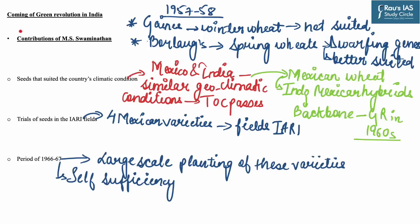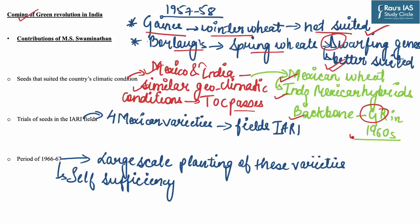Coming back to the Green Revolution in India: MS Swaminathan's contribution is well known. His scientific knowledge about India's climatic conditions and crop productivity guided the country towards agricultural revolution, making India self-sufficient in grain production. The Gaines variety was a winter wheat not suitable for India's climate, while Borlaug's spring wheats from Mexico with dwarfing genes were better suited, as Mexico and India share similar geoclimatic conditions — the Tropic of Cancer passes through both countries. Four Mexican wheat varieties were first experimented at the Indian Agricultural Research Institute, and from 1966-67, large-scale plantations were taken up, attaining self-sufficiency in food grains.